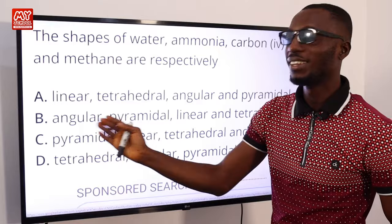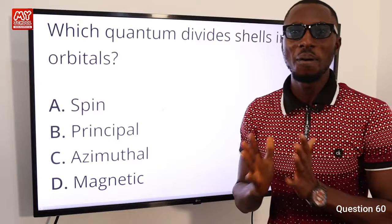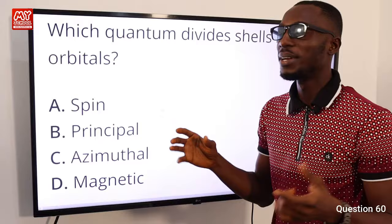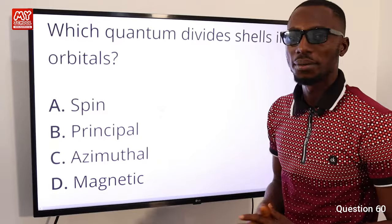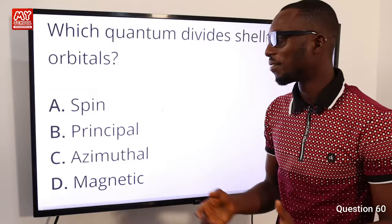Question 60: Which quantum number divides shells into orbitals? Shells are divided into subshells, and subshells contain orbitals identified by letters s, p, d, f. This division is described by the subsidiary or azimuthal quantum number. Option C is correct.